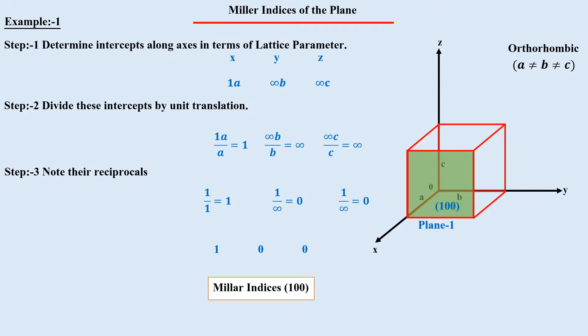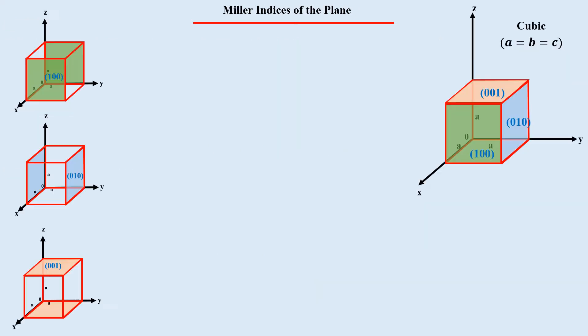Notice that for any axis to which the plane is parallel, the corresponding Miller index is 0. Plane 2 cuts the y-axis at b while parallel to the x- and z-axes, so its Miller indices are (0 1 0). Plane 3 is parallel to the x- and y-axes while cutting the z-axis at c, giving Miller indices (0 0 1). In a cubic crystal, these three planes exist at equal distances from their consecutive parallel planes, which can be verified with the interplanar spacing formula. Since all three planes are equidistant, they form a family, denoted with curly brackets.